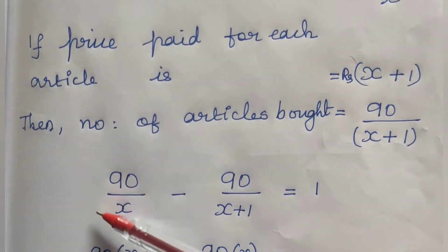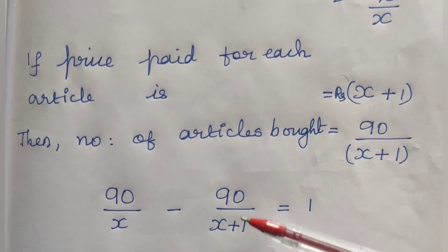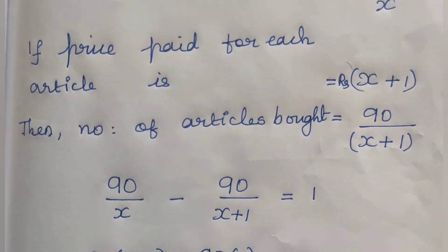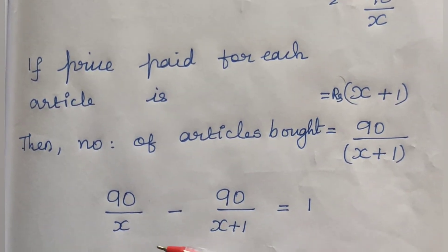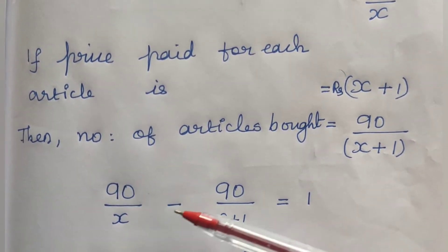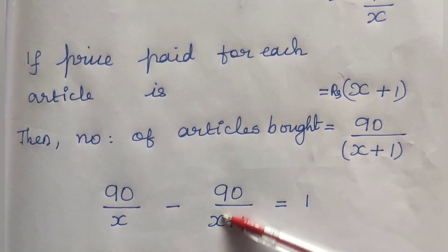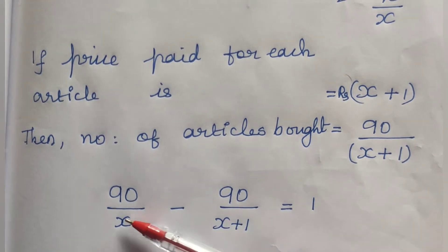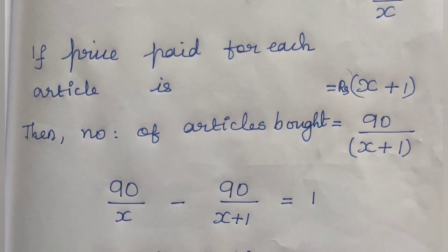So 90 divided by X is the number of articles when price was X, minus 90 by X plus 1 is the number of articles when price was 1 rupee more. In the first case he got 1 article extra, so 90/X minus 90/(X+1) equals 1. The difference between the two number of articles is 1.